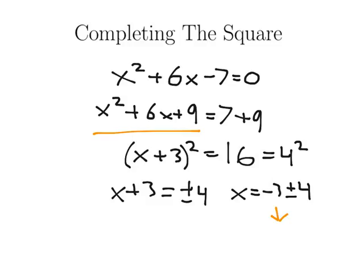So x is negative 3 plus or minus 4. This means that x could be negative 3 plus 4, which is 1, or negative 3 minus 4, which is negative 7.